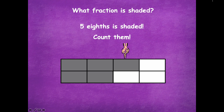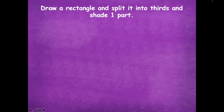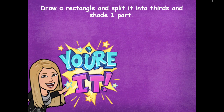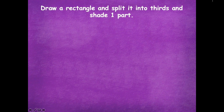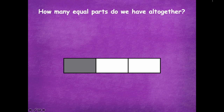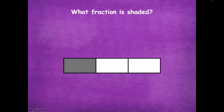Now it's your turn to draw some shapes. Draw a rectangle and split it into thirds, then shade one part. Pause the video, draw your rectangle, then click play when you're ready. Here's my rectangle — three parts, that's thirds — and I shaded one part. How many equal parts do we have altogether? Three. What fraction is shaded? One-third.